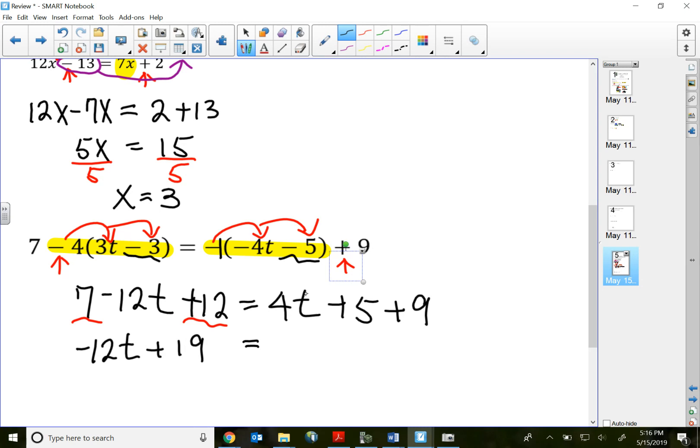7 plus 12 is positive 19. On the right side, 4t has no like term to combine on the right side, so that's still 4t. 5 plus 9, positive 14.